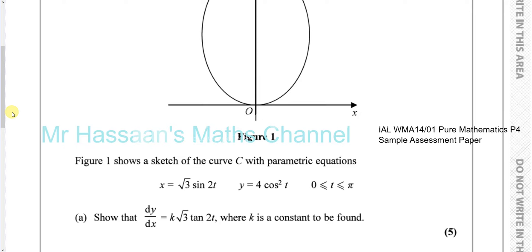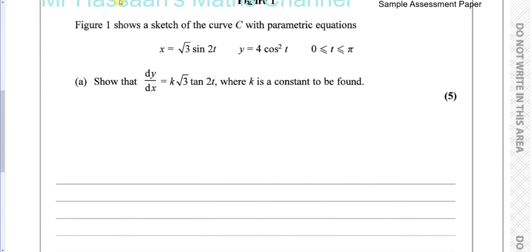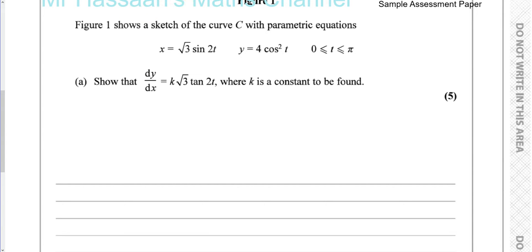We're given the equation in parametric form, which means it's expressed with a third parameter — not just in terms of x and y, but in terms of another parameter, in this case t. We have to differentiate this and find the gradient function. This is done using what's called the chain rule.